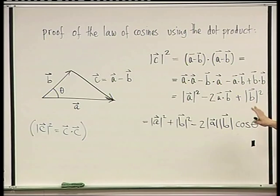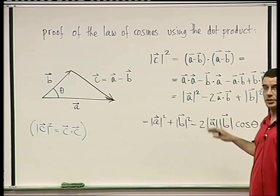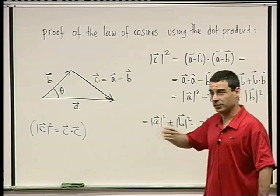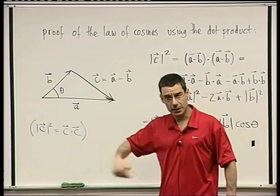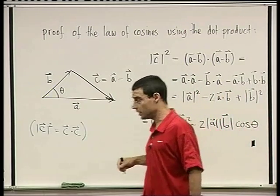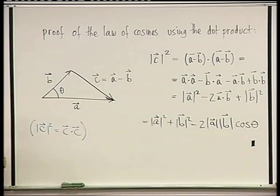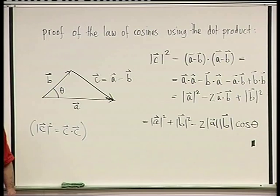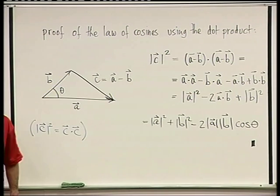This wraps up our discussion of the dot product. You'll still need to practice and get used to using it. Next comes the cross product, which is yet another sort of multiplication of vectors.